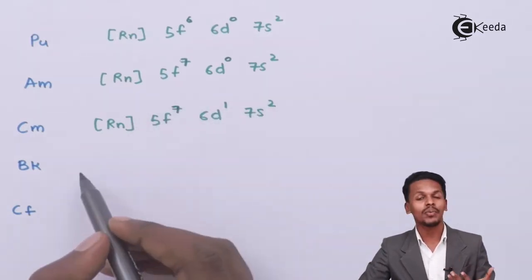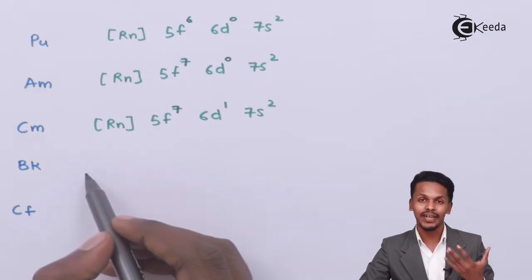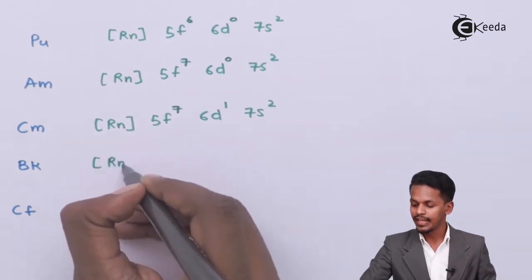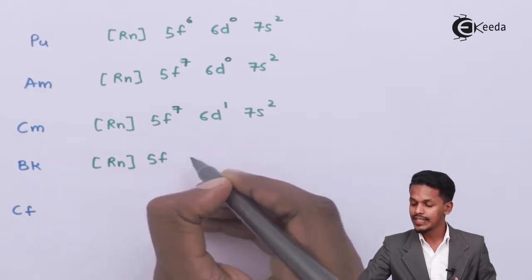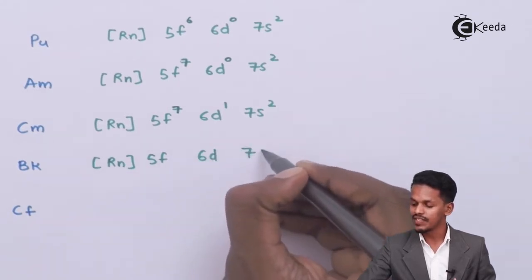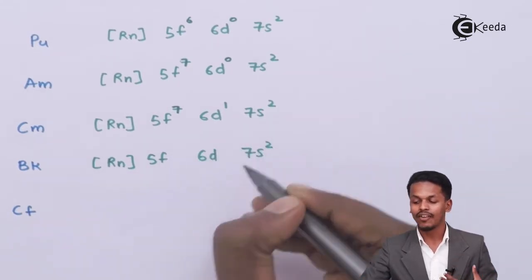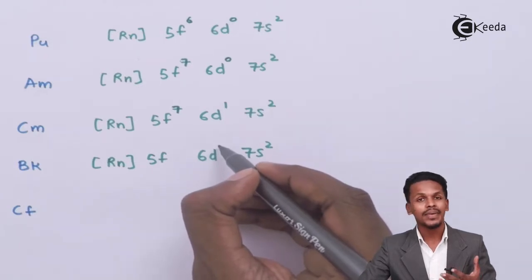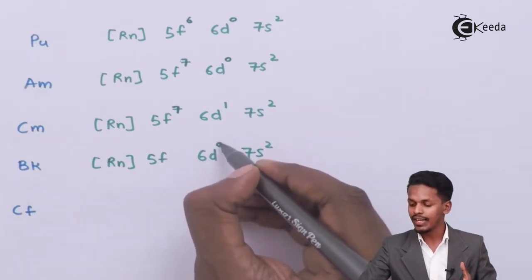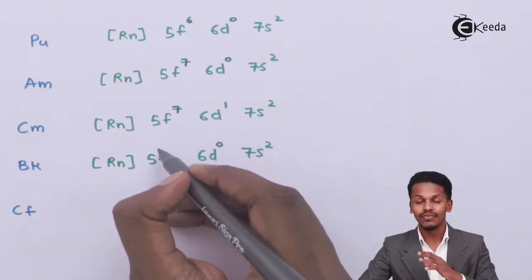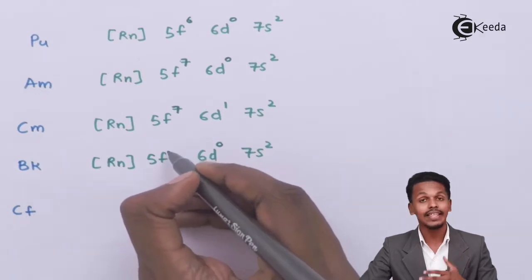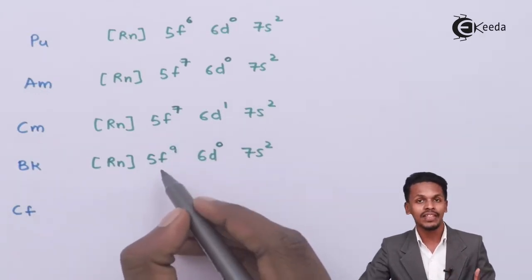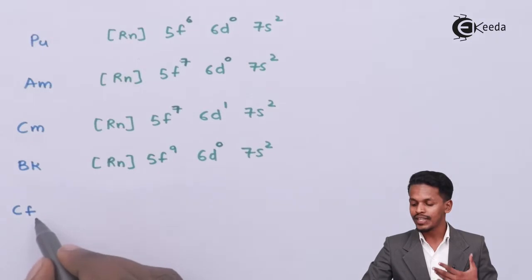For berkelium, the electronic configuration is [Rn] 5f⁹ 6d⁰ 7s². There is no electron in the d orbital, and all extra electrons are added to the 5f orbital, giving nine electrons in 5f.